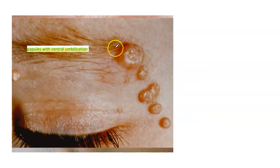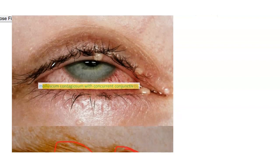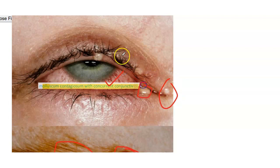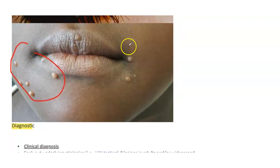These are the skin-colored, pearly dome-shaped papules with central umbilications. This picture shows molluscum contagiosum with concurrent conjunctivitis. These are the lesions. This picture shows molluscum contagiosum with oral candidiasis. These are also umbilicated lesions of the molluscum.